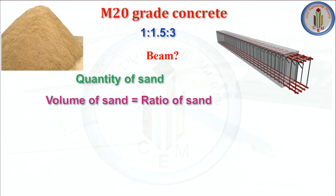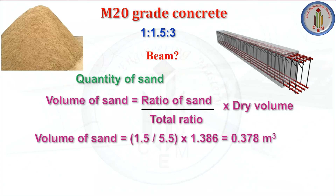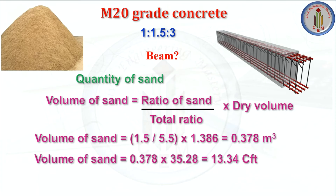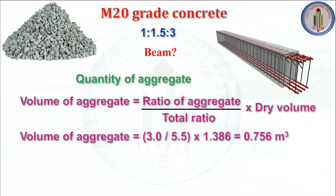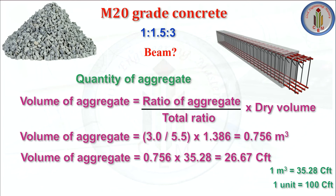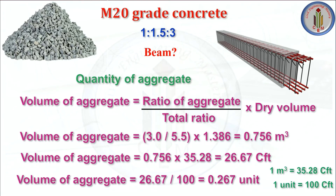Next, quantity of sand for the beam. Volume of sand equals ratio of sand divided by total ratio, multiplied by dry volume — 1.5 divided by 5.5 multiplied by 1.386 — giving 0.378 meter cube, which is 13.34 CFT, and converting to unit gives 0.13 unit. For aggregate, volume equals 3 divided by 5.5 multiplied by 1.386, giving 0.756 meter cube, which is 26.67 CFT — converting to unit gives 0.267 unit.